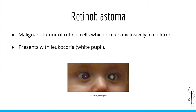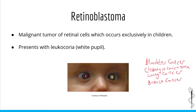Homozygous loss of function mutations in the RB gene — that is, mutations which lead to loss of function of the RB protein in both copies of chromosome 13 — can lead to the development of retinoblastoma, a malignant tumor of immature retinal cells that occurs exclusively in children. The classic presentation is leukocoria, or a white appearance of the pupil in photographs. While retinoblastoma is the classic tumor associated with RB, many other cancers are also associated with RB loss of function, including bladder cancer, cholangiocarcinoma, lung cancer, and breast cancer, depending on which cell type the mutation occurs in.